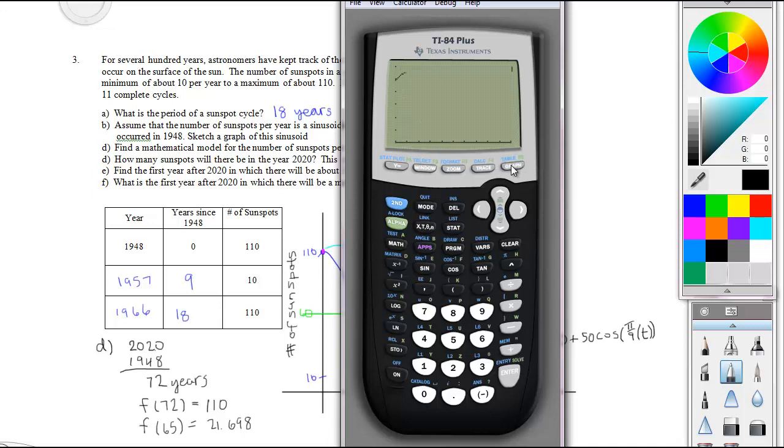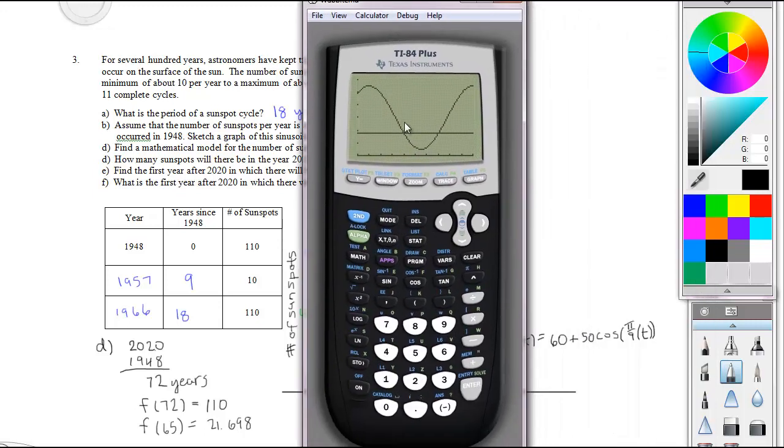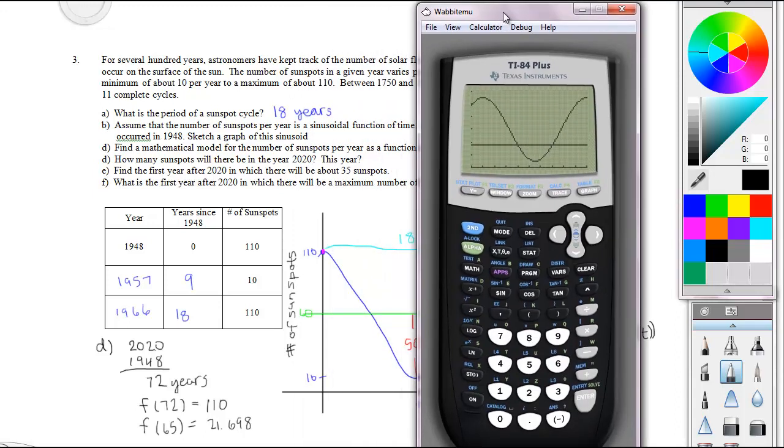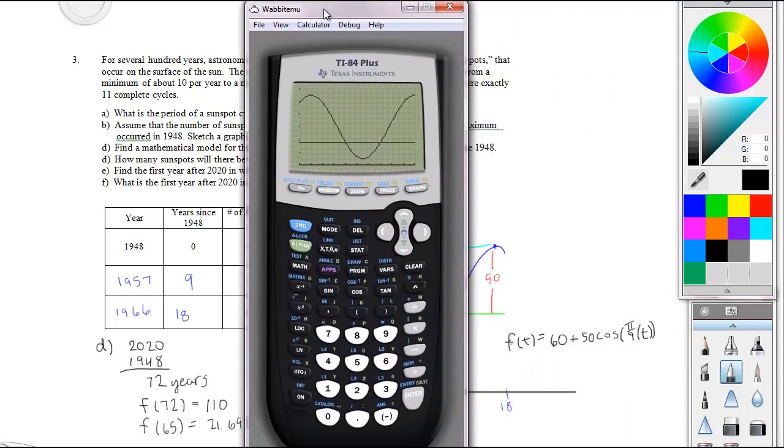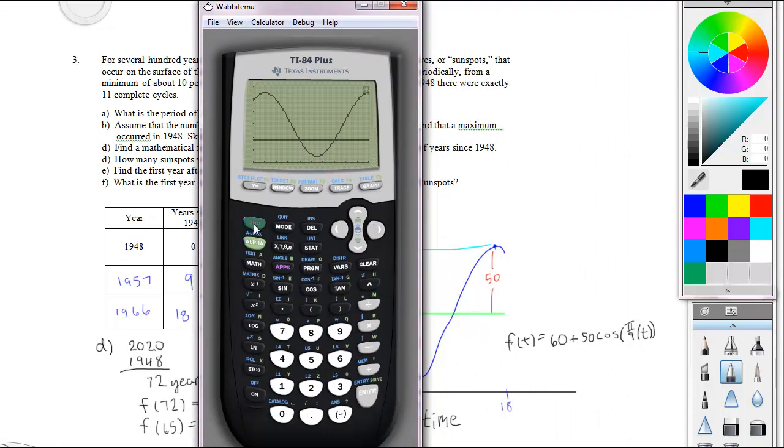Graph that, and there's the 35 sunspots. I just want to find this point. You find that point of intersection by doing 2nd calculate intersect. Press Enter when it asks for the first curve, press Enter for the second curve, then move the blinker closest to the one you want to find. I get x equals 78.